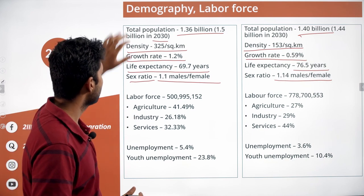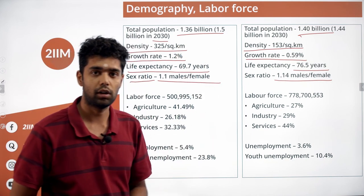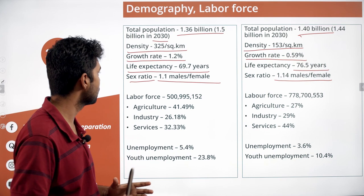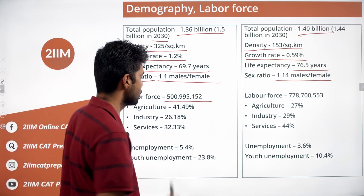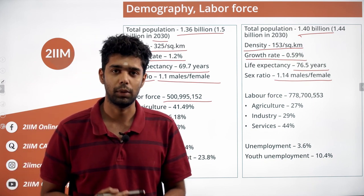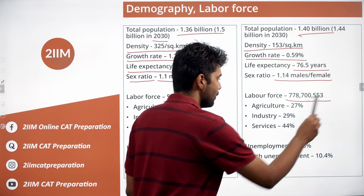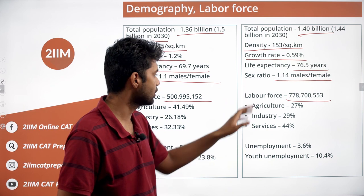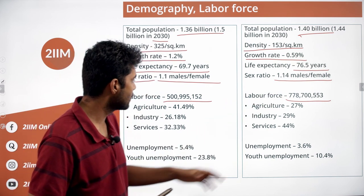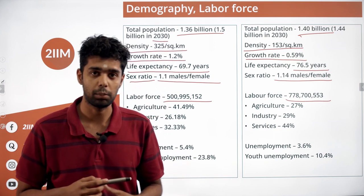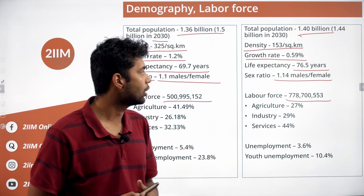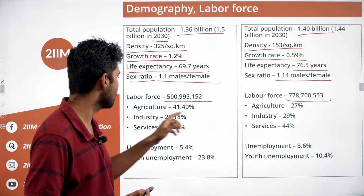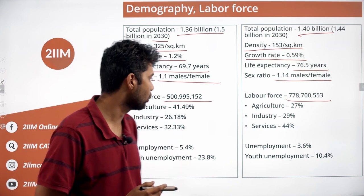Now let's talk about the labor force. Out of India's 1.36 billion people — from the youngest infants to the oldest — the working-age population is approximately 501 million. For China, it is around 778 million. So population-wise and labor-force-wise, China is number one and India is number two. However, China's working-age population is rapidly declining due to its low growth rate, and by 2050 the population is expected to reduce. For India, the labor force will cross 750 million in the coming decades.